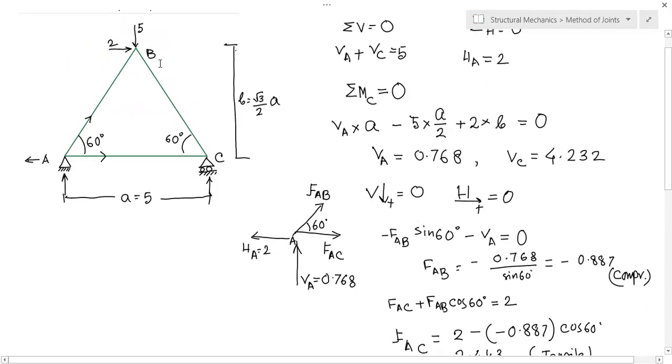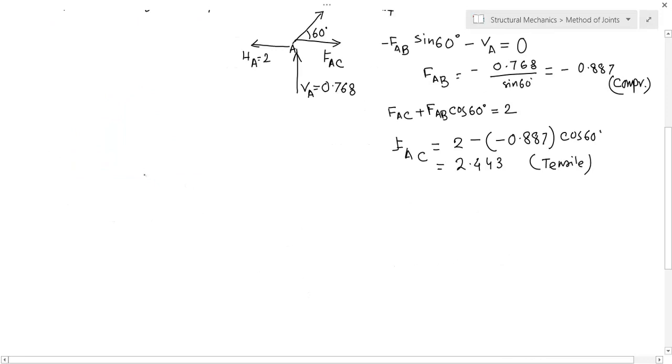Let us take the joint B here. For joint B, what are the forces? That is the vertical force 5, horizontal force 2, and there are 2 member forces like this. Here again you take away from the joints.